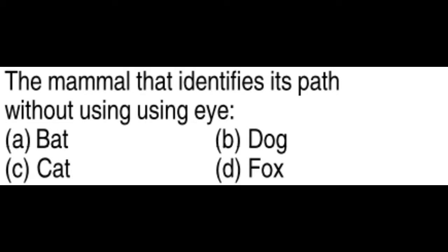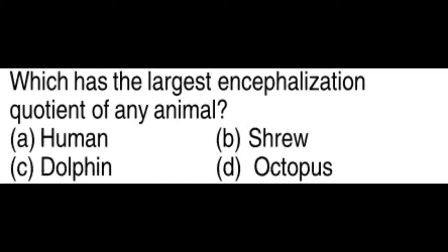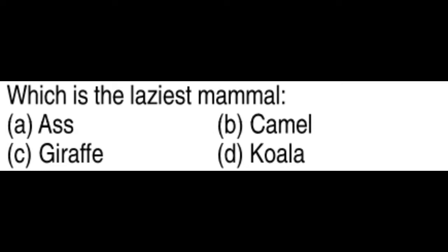The mammal that identifies its path without using eyes is the bat. The second fastest animal in the cat family is the lion. Which has the largest encephalization quotient of any animal? Humans. Which is the laziest mammal? The koala.